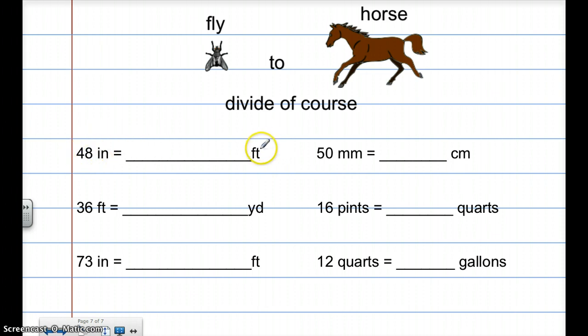So I have got 48 inches. Well, how many inches are in a foot? 12. So I'm going to do, this is fly to horse, divide of course. So I'm going to take 48 and divide it by 12, which is 4. Now I've got again, fly to horse, divide of course. I have millimeters is smaller than centimeters, so I have to take 50. And how many millimeters are in a centimeter? That's 10. So I have to take 50 and divide it by 10, and that's 5.